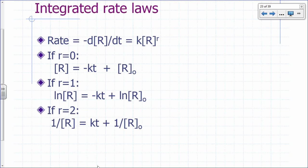Another way to determine reaction orders is to use integrated rate laws. There are rate laws for which the reaction order is fairly easy to determine — specifically where the rate depends only on the concentration of one reactant.